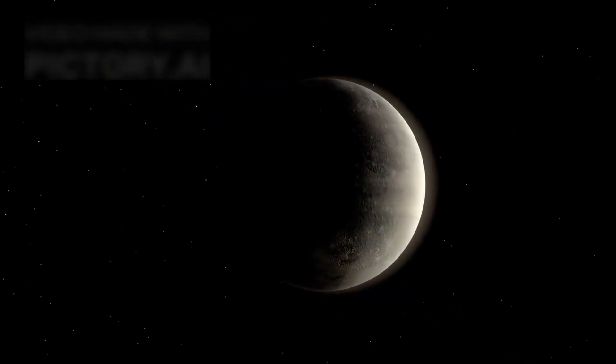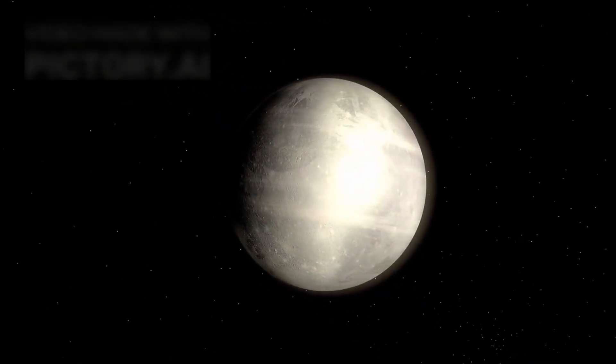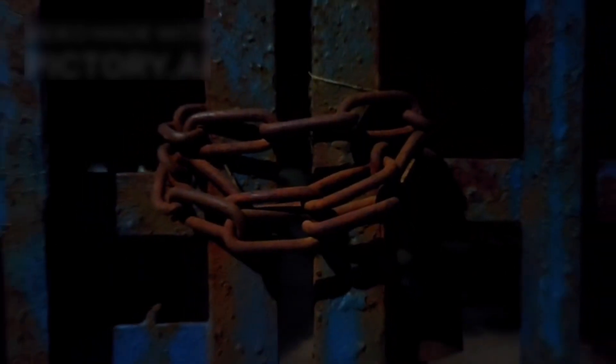Since its discovery in 1930, Pluto hasn't even completed one full circle around the solar map. That shows how far and slow this tiny world drifts through the deep space like a lonely actor on a dark stage.